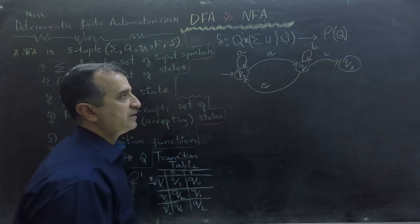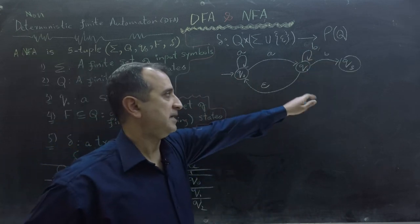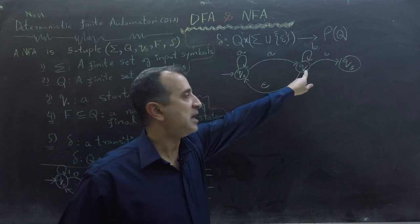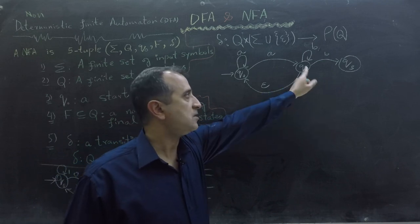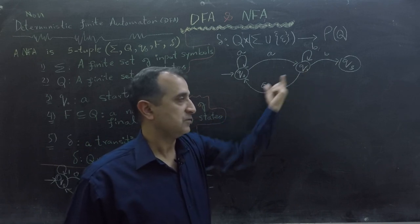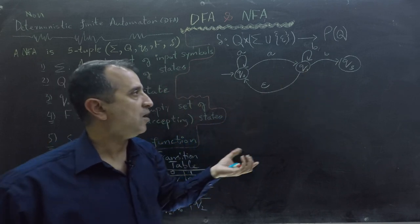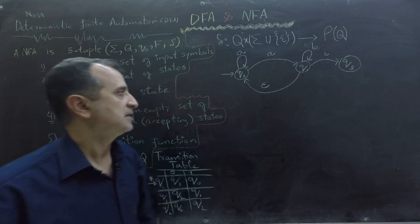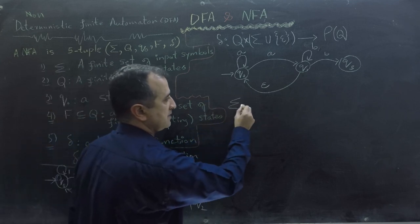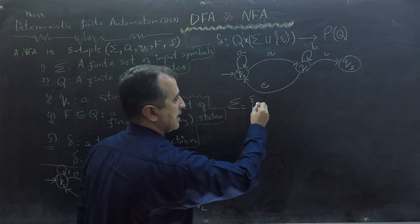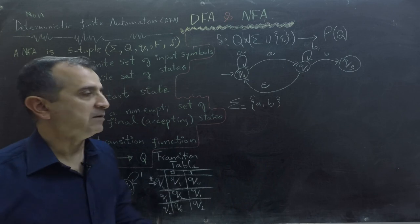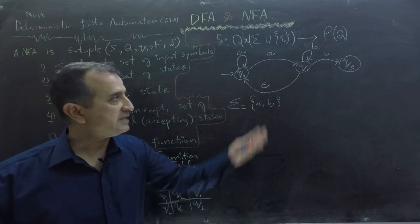Let's make this NFA with some more transitions. Also notice that from Q1, we have no transition on input symbol A. So we don't have to consume all of our input symbols. In this example, my input symbols are A and B. Now let's create the transition table of this NFA.